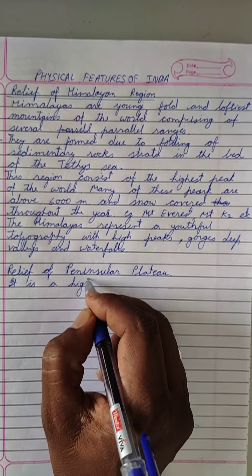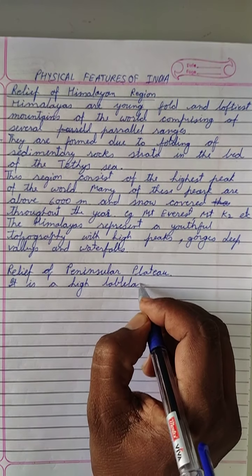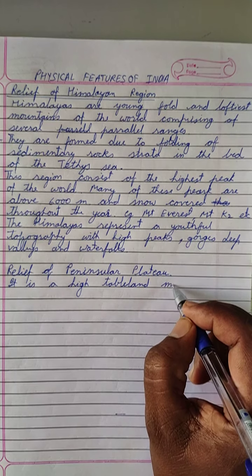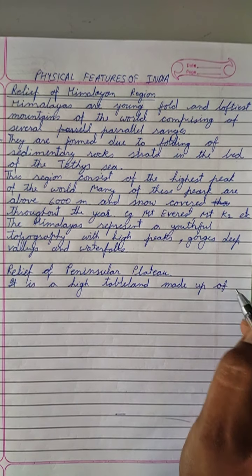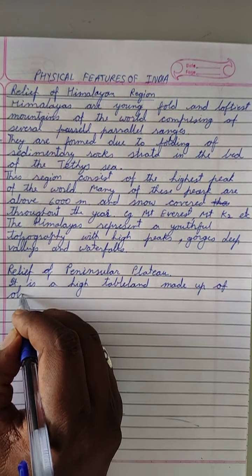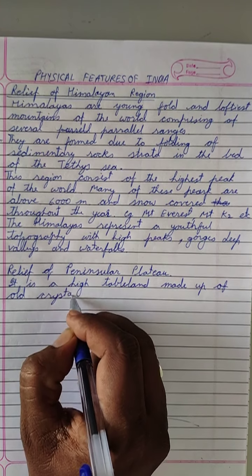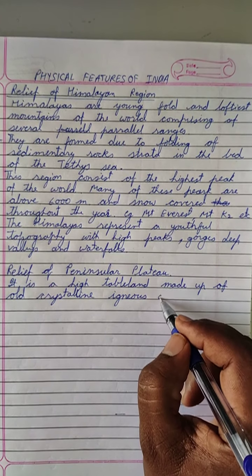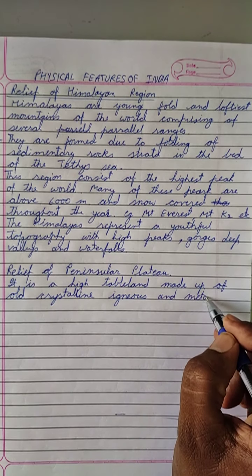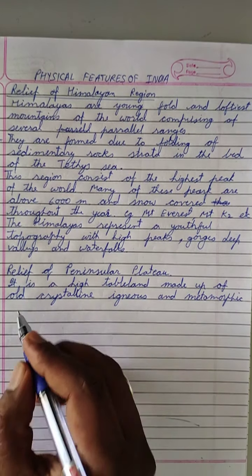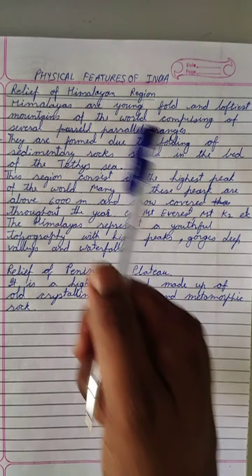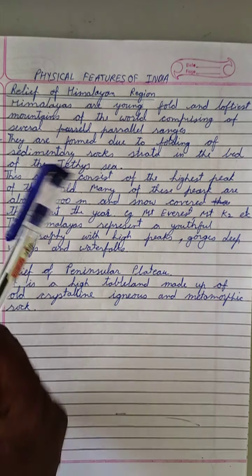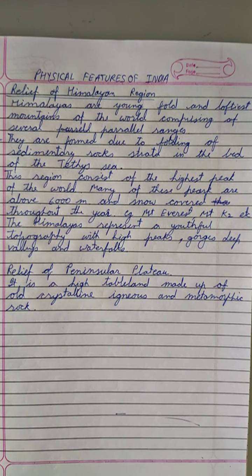The relief of the peninsular plateau: it is a high tableland made up of old crystalline igneous and metamorphic rocks. The Himalayas are young and made up of sedimentary rocks, whereas the peninsular plateau is old and made up of igneous and metamorphic rocks.